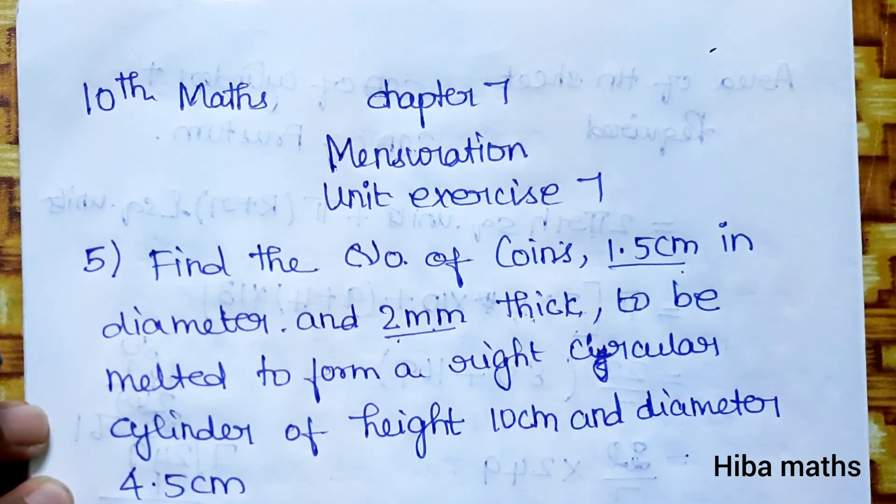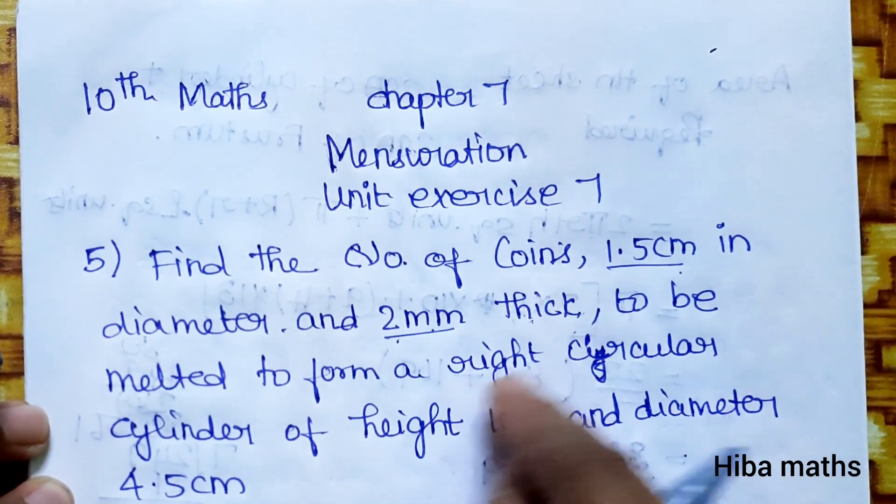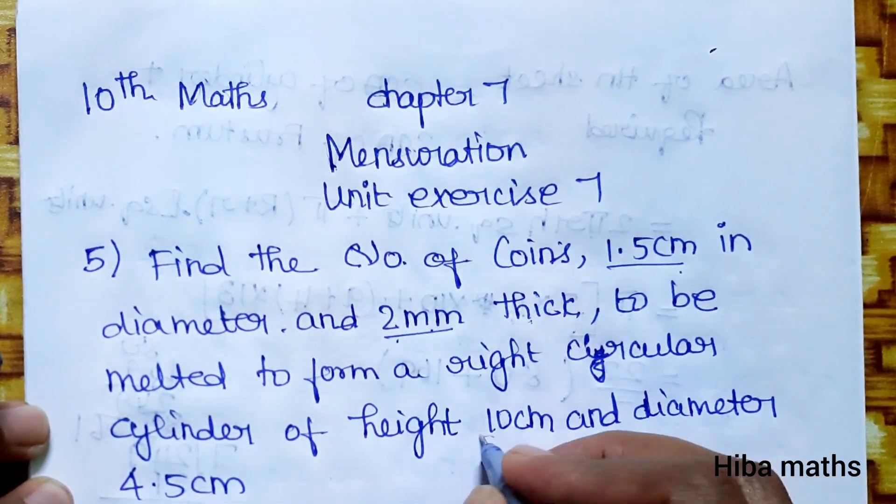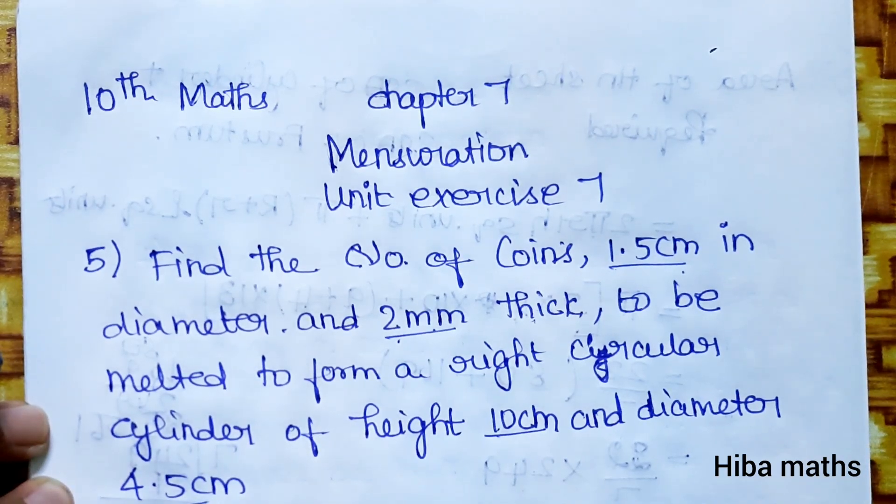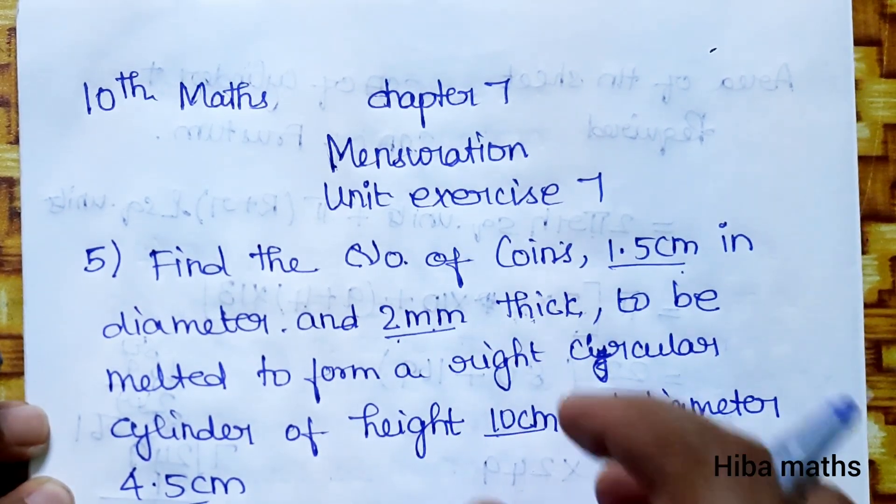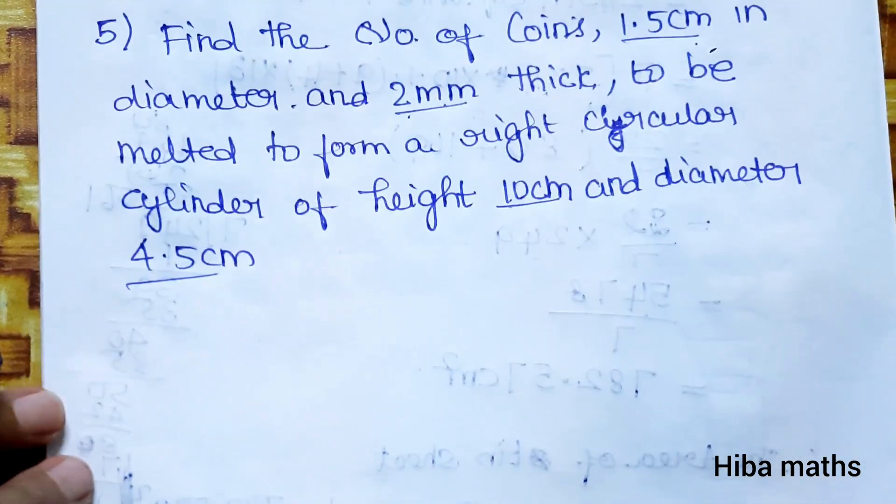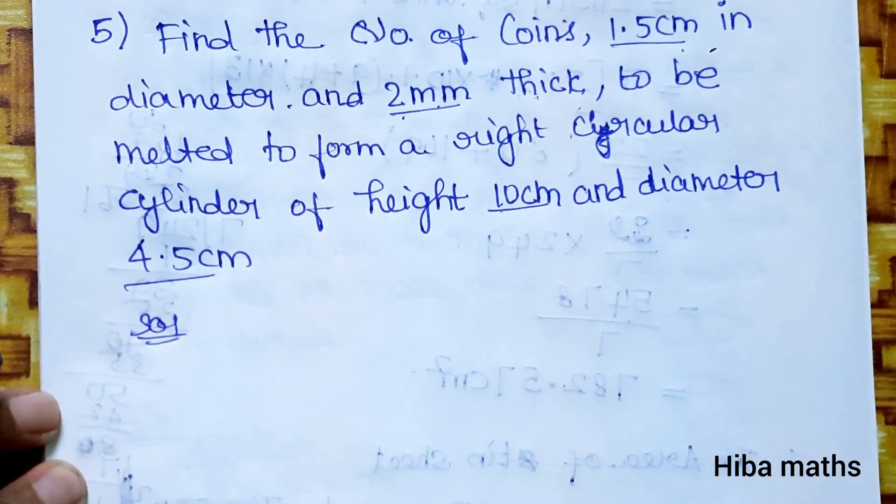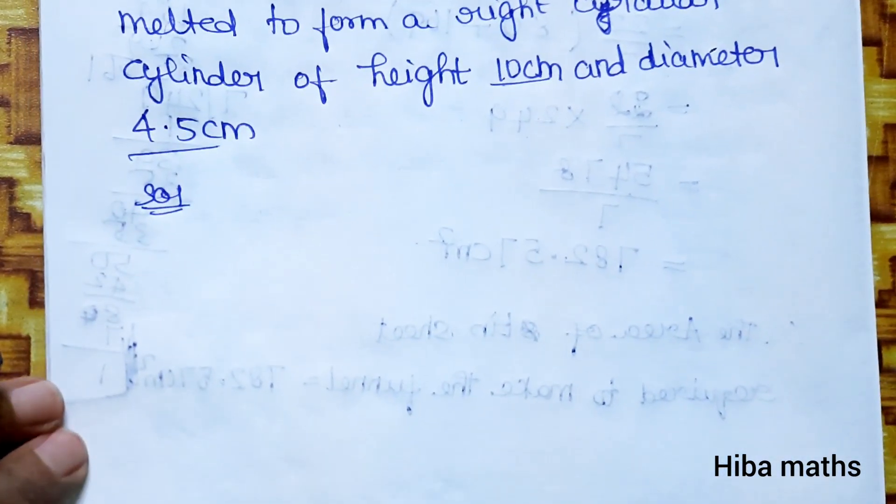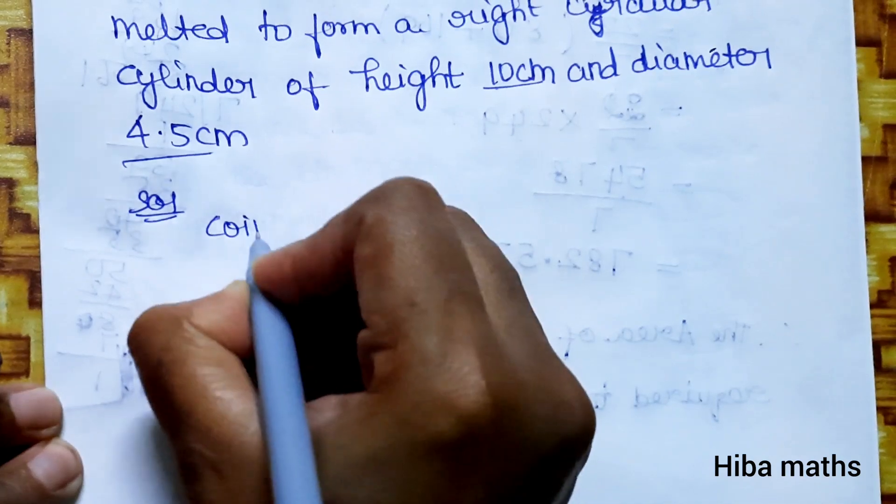The matter which is to be melted forms the right circular cylinder. This is how we solve for the number of coins. The solution has two parts: one is coin and one is cylinder. So first is coin.